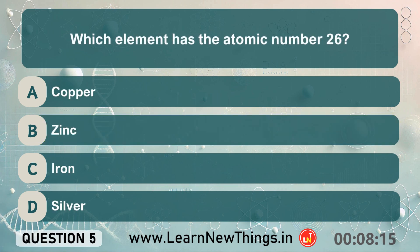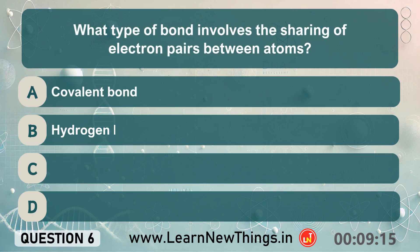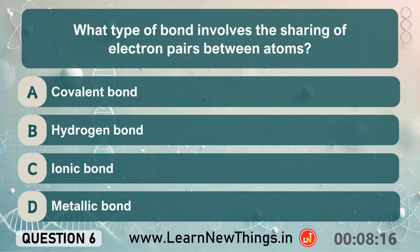Which element has the atomic number 26? Iron. What type of bond involves the sharing of electron pairs between atoms? Covalent bond.